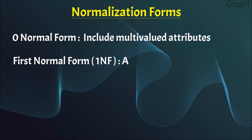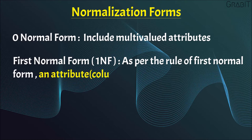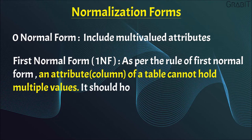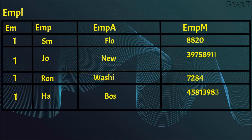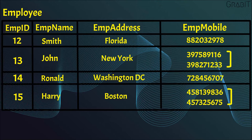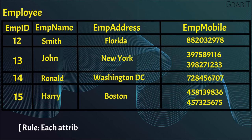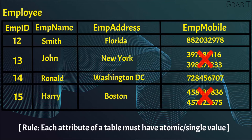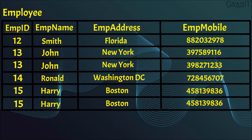First Normal Form (1NF): As per the rule of First Normal Form, an attribute of a table cannot hold multiple values — it should hold only atomic values. Suppose a company wants to store the names and contact details of its employees. Two employees have two mobile numbers, so the company stores them in the same field. This table is not in 1NF, as each attribute must have atomic values. The employee mobile values for John and Harry violate that rule. To make the table comply with 1NF, we should have the data separated into individual rows.